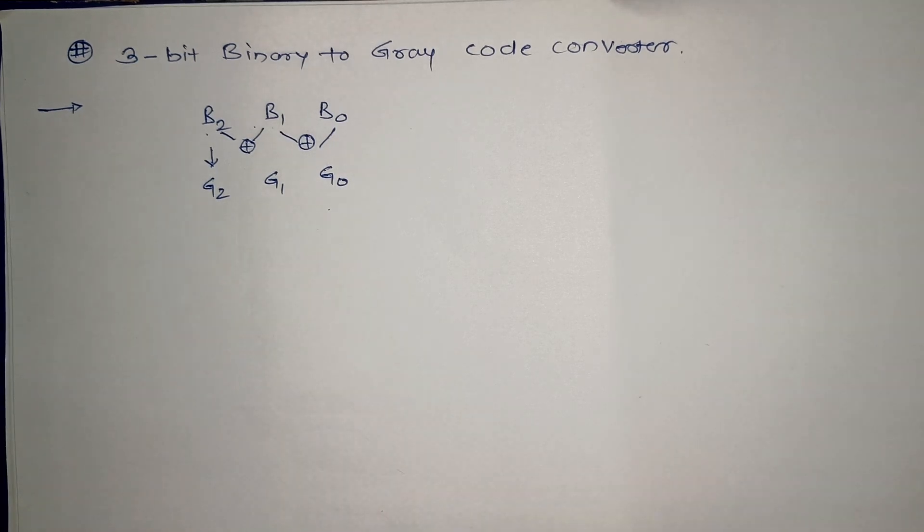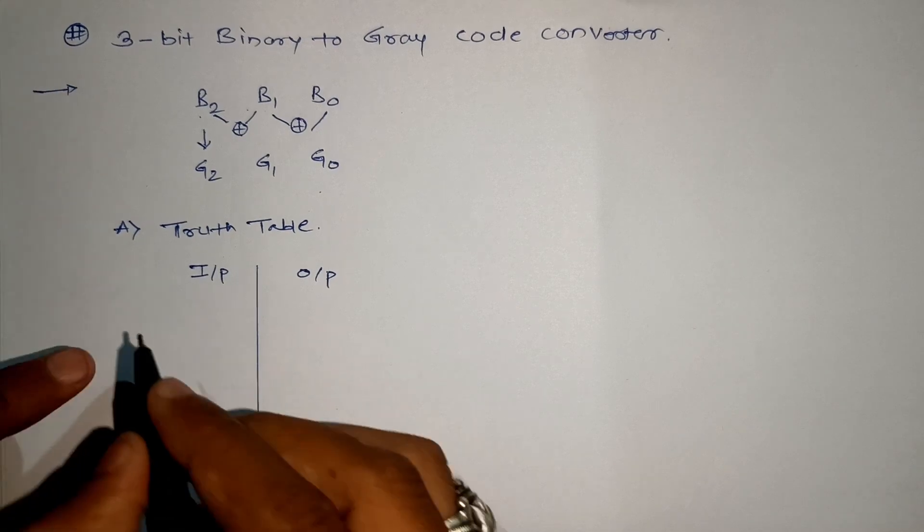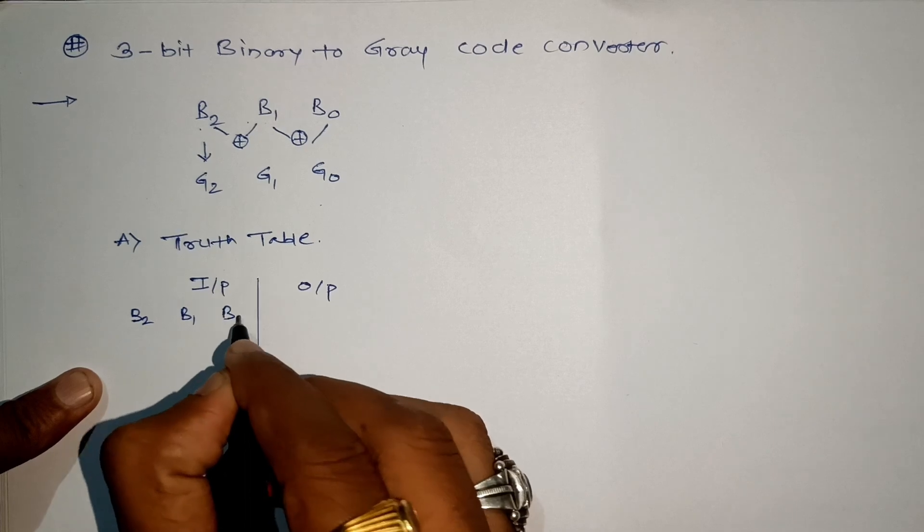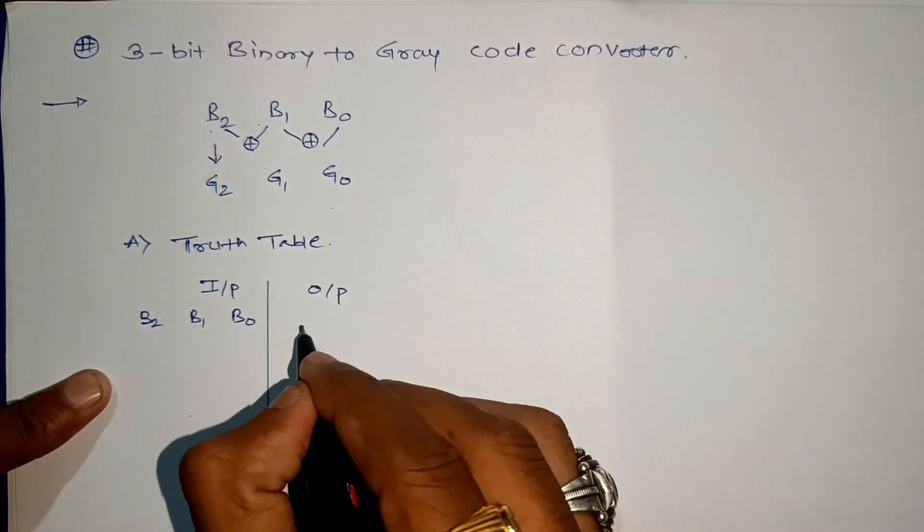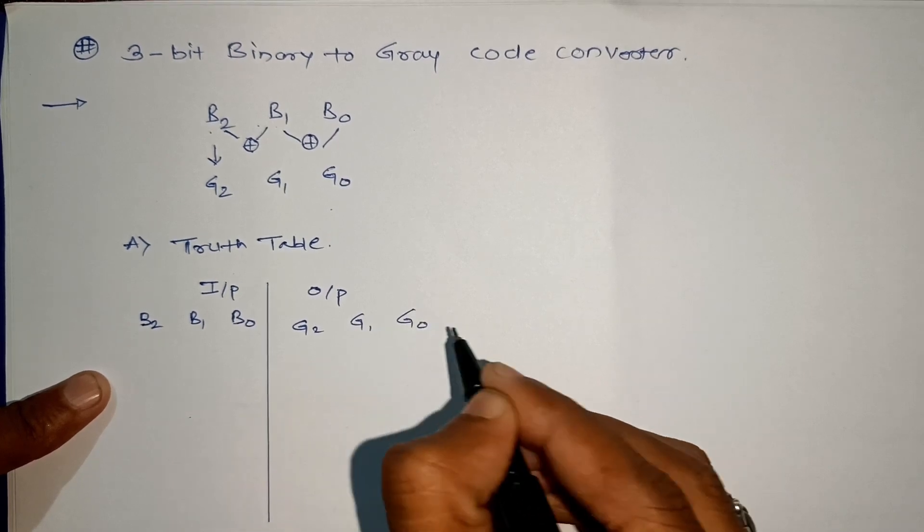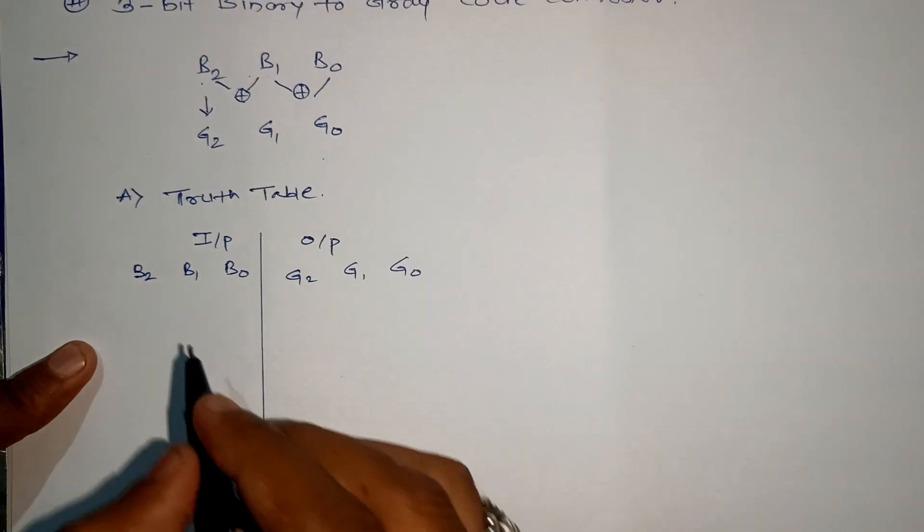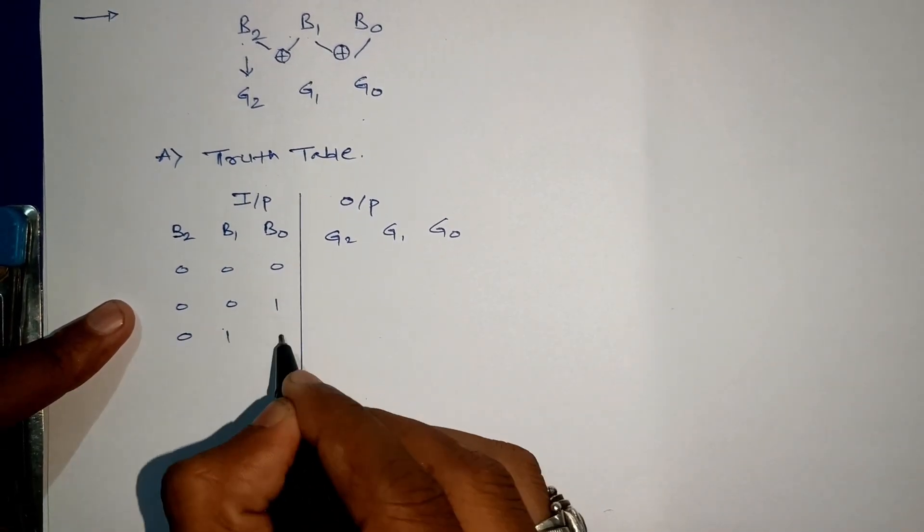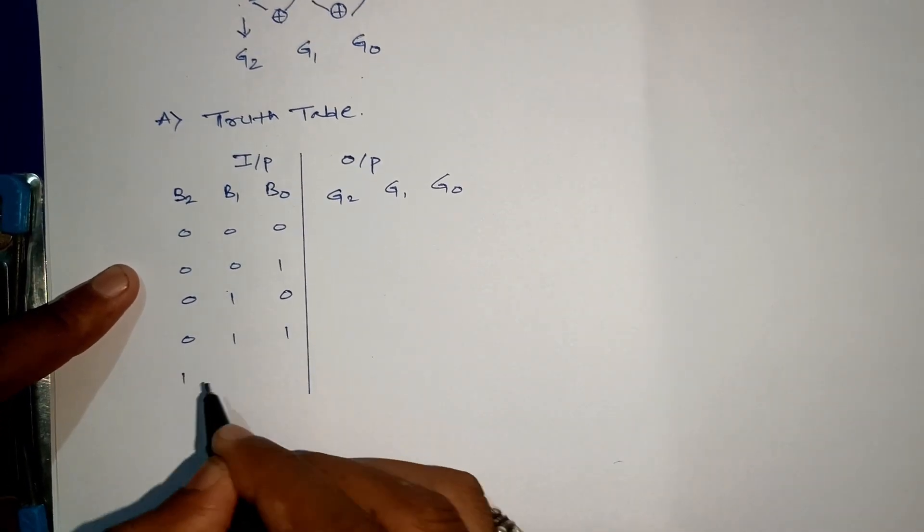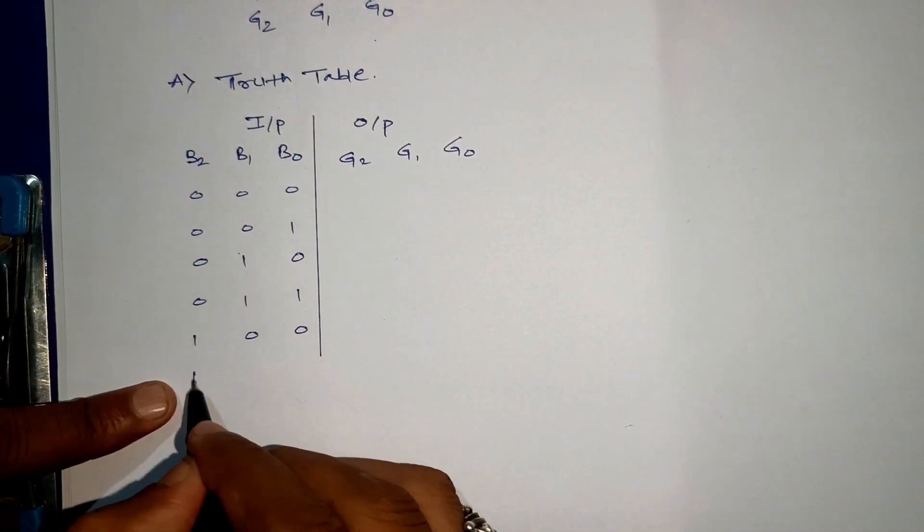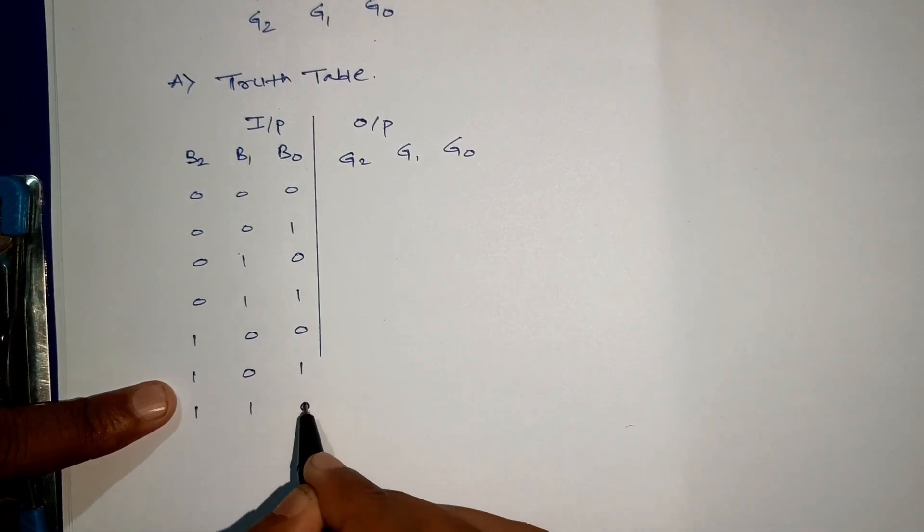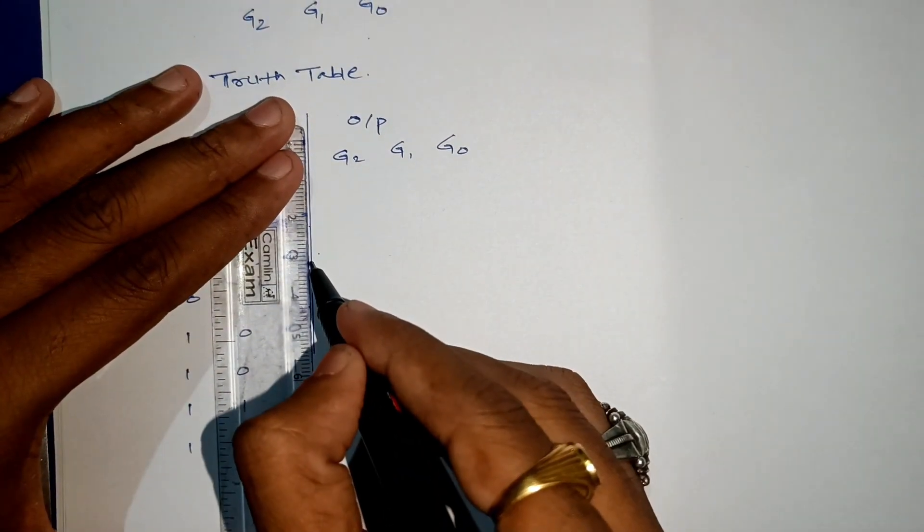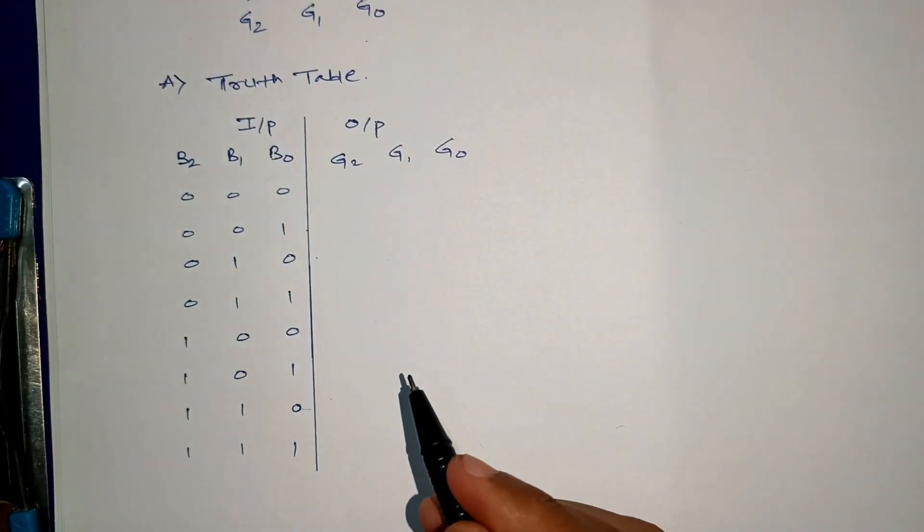Let us draw a truth table. I will write the input terms as B2, B1, and B0, and at the output side we have gray code G2, G1, and G0. This is how we have drawn our three-variable truth table. Now let us convert this into gray code.